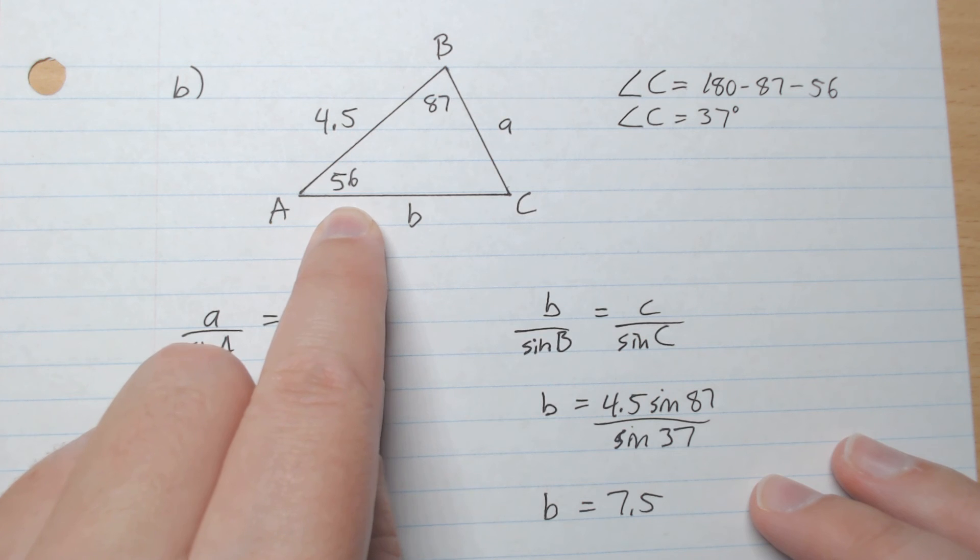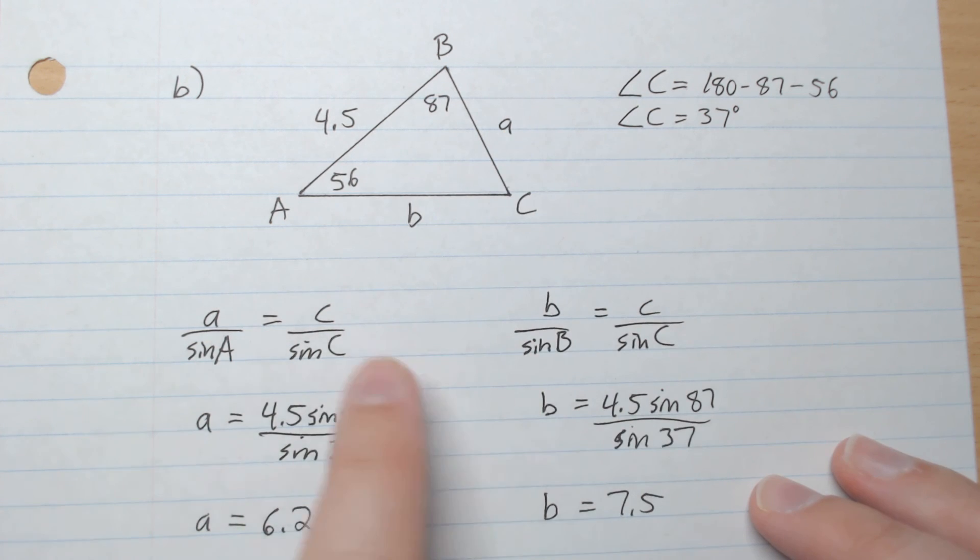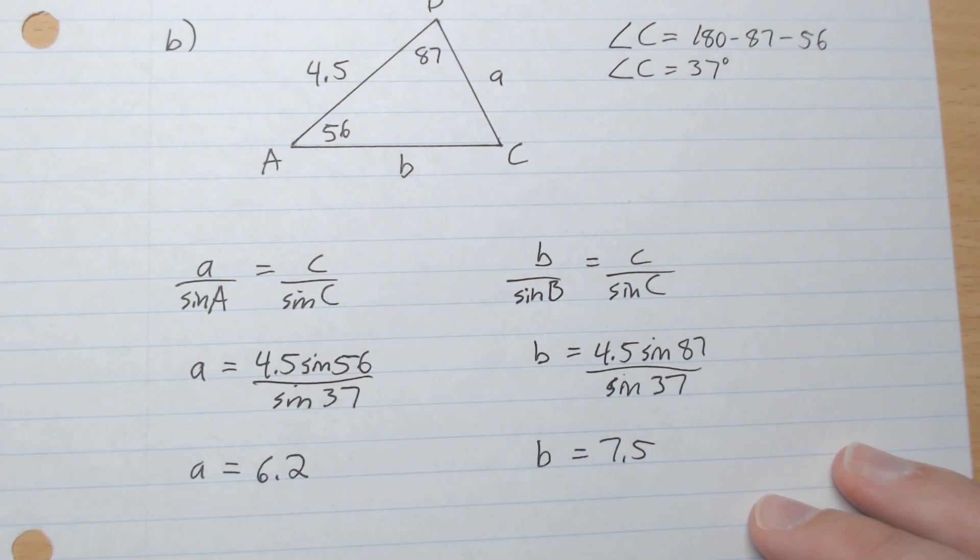We have angle A but not side a, and we have side c and angle C. So we're going to multiply sine A to both sides. And that gives 6.2.